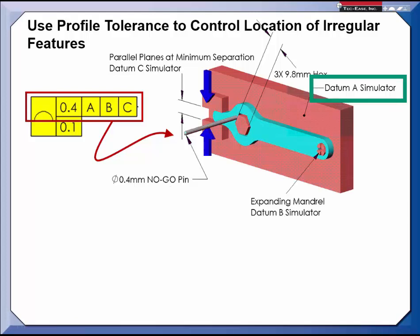Datum A is simulated by the surface indicated. Datum B is a variable simulator that will be centered in the datum feature regardless of its size. The datum C simulator is also variable, and will close on datum feature C.